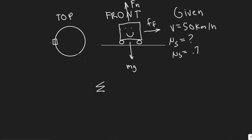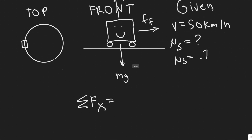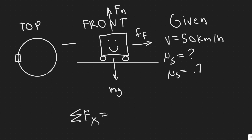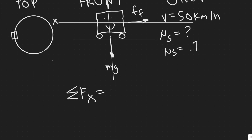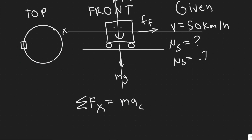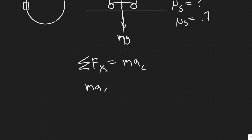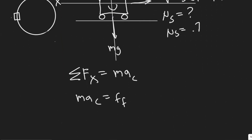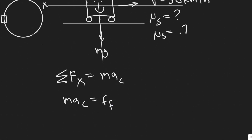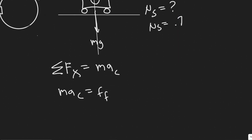We're going to sum the forces in the x-direction, which corresponds to the horizontal axis. The sum of forces in x equals ma, but since we're going in a circle, we use centripetal acceleration, so it's ma_c. The only force in the x-direction is the force of friction, and choosing rightward as positive, the force of friction is positive. So the centripetal force has to be equal to the force of friction.